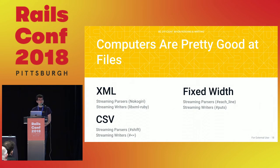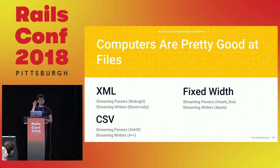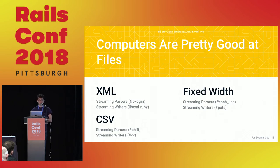When dealing with XML files specifically, you want to use streaming parsers and streaming writers — reading input one line or one token at a time. For XML, Nokogiri has a wonderful streaming parser. It reads an XML token at a time, yields that to you, and you build up a linear parsing view of the XML file. It's a little more work but saves you, especially when given a giant file that would blow out the memory stack. It's also more efficient on smaller files.